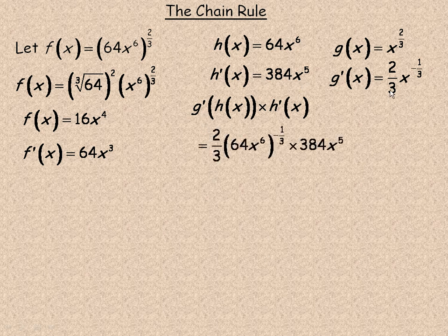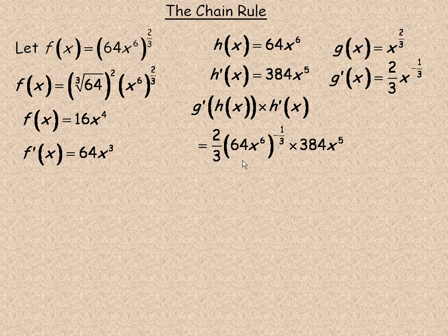So g'(h(x)) gives us (2/3)(64x⁶)^(−1/3), times h'(x) = 384x⁵. To clarify: g'(h(x)) means this is the derivative of g, but instead of x, it's evaluated at h(x). So we have 64x⁶ here instead of just a plain x, raised to the power of negative 1/3.